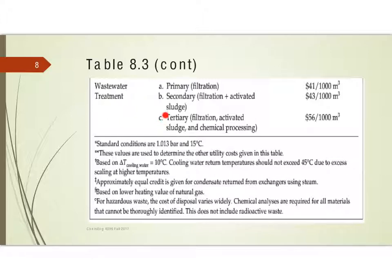Or we have tertiary treatment, which is filtration and activated sludge for the trace elements, but also chemical processing — so maybe we need to adjust the pH, etc. The costs are going to be reflected in this table. In the next lessons, we're going to be looking at some of these utility costs with a little bit more detail on how we might use these tables. Thank you very much.